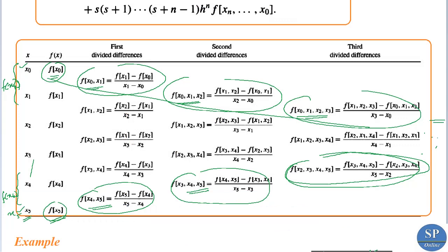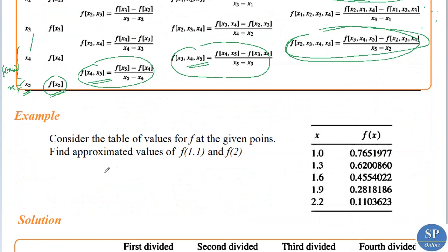In the last lecture, we discussed Newton's forward difference formula and backward difference formula. Now we can discuss an example. Consider the table of values for f at the given points: x = 1, 1.3, 1.6, 1.9, 2.2, and we are given the values of f at those points — the same values discussed in the previous lecture. Now find the approximate values of f(1.1) and f(2), that is, we need to interpolate this function at the points 1.1 and 2.